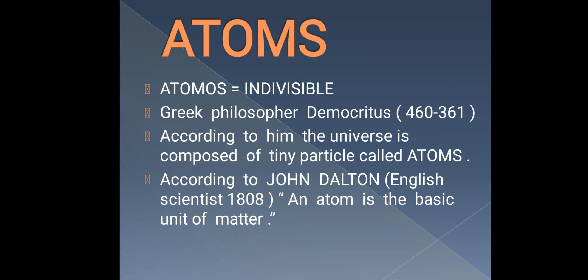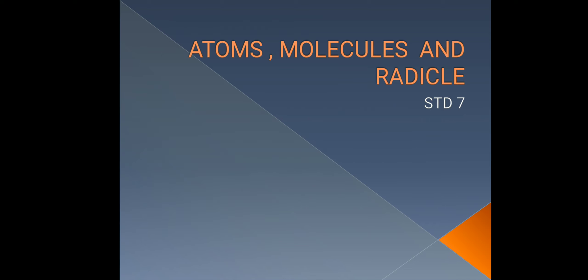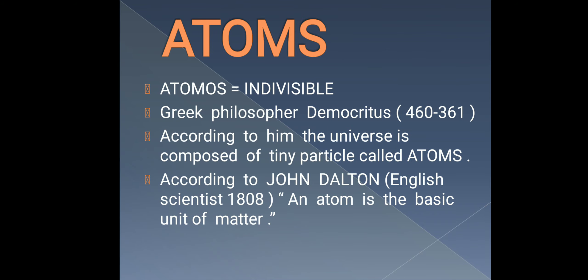Later on, according to John Dalton — he was an English scientist — in 1808 he said that atom is the basic unit of matter. You already know about matter: anything which occupies space, has mass, and which can be felt by our senses is known as matter. Each and every form of matter, whether it is solid, liquid, gas, or the fourth state of matter which is plasma state, the basic unit of any form of matter is the atom.